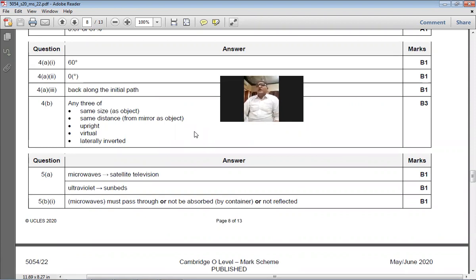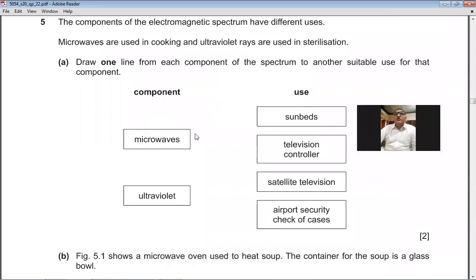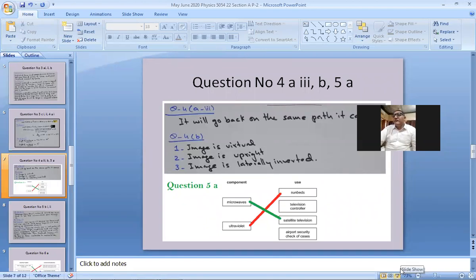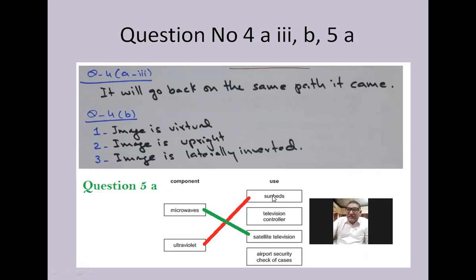Question 5: Components of the electromagnetic spectrum have different uses. Microwaves are used in cooking; ultraviolet rays in sterilization. Draw one line from each component to another suitable use. Microwaves → satellite television. Ultraviolet → sunbeds. Those are the correct pairings.